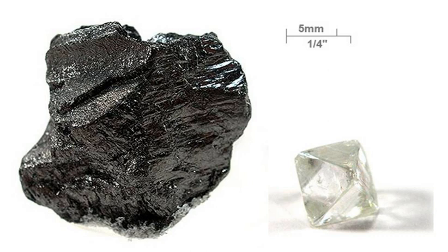The amorphous form is an assortment of carbon atoms in a non-crystalline, irregular, glassy state, not held in a crystalline macrostructure. It is present as a powder, and is the main constituent of substances such as charcoal, lampblack and activated carbon.